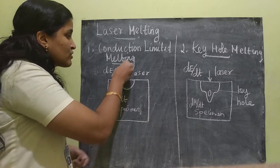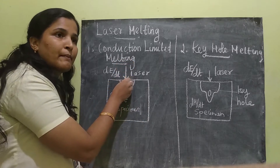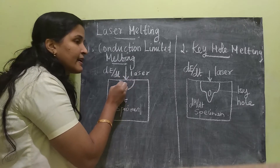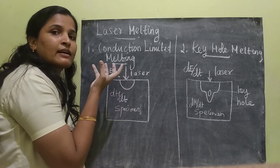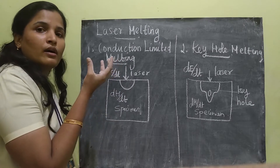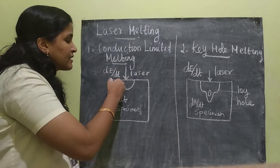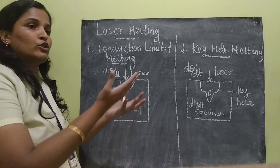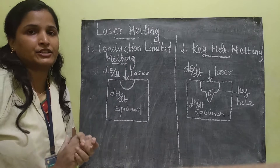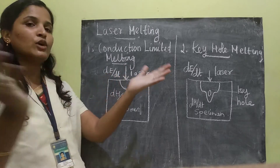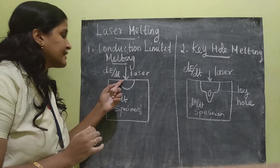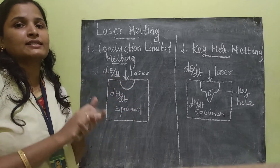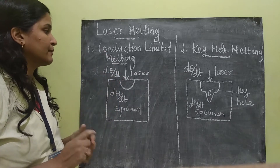As soon as the laser light enters the material, the hemispherical area surrounding the laser will be melted and the heat will be transferred or conducted equally throughout the material. Because of equal conduction of the heat, we get a hemispherical shaped molten surface. This is the conduction limit.